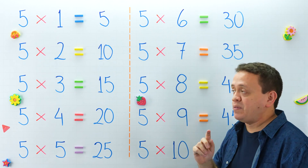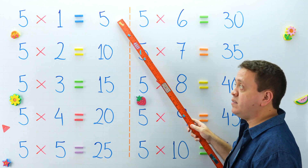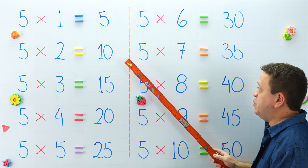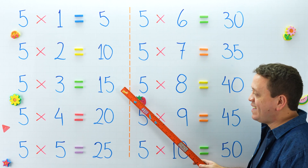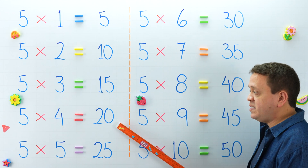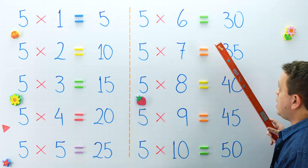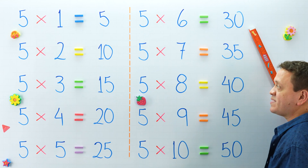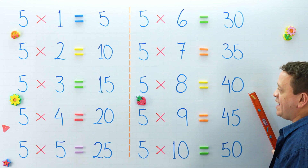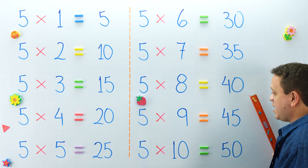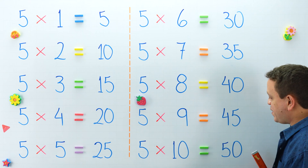Why don't we take another look at the products of this table? Let's start with 5 times 1. 5 times 1 equals? And 5 times 2 equals? 5 times 3 equals? And 5 times 4 equals? What is 5 times 5? 5 times 6 equals? And 5 times 7 is equal to? Over here, 5 times 8 equals? One more: 5 times 9 equals? And 5 times 10 equals?